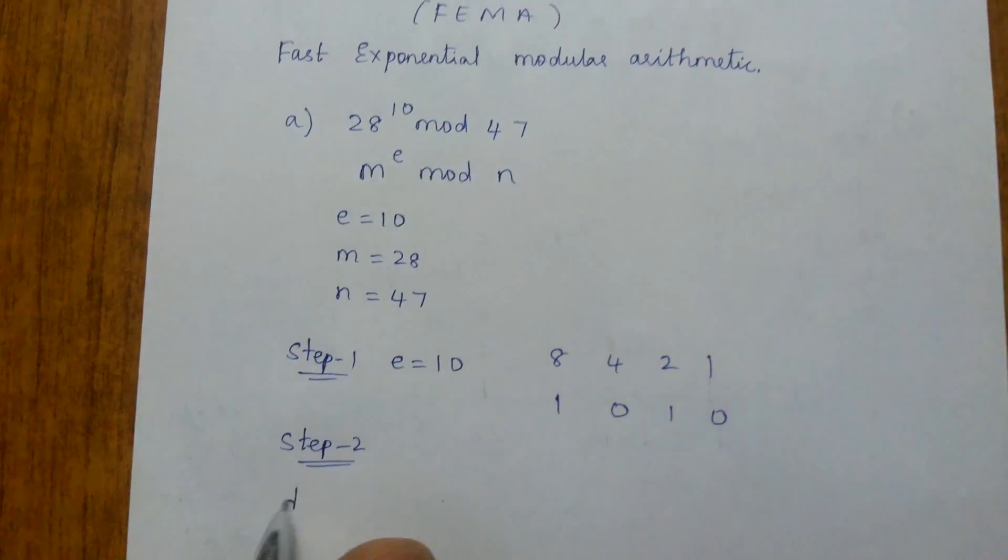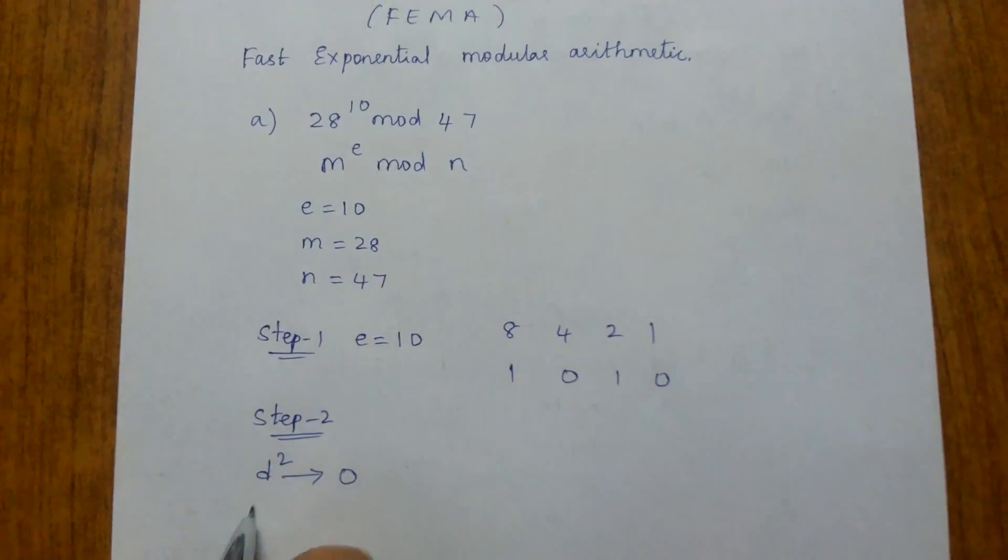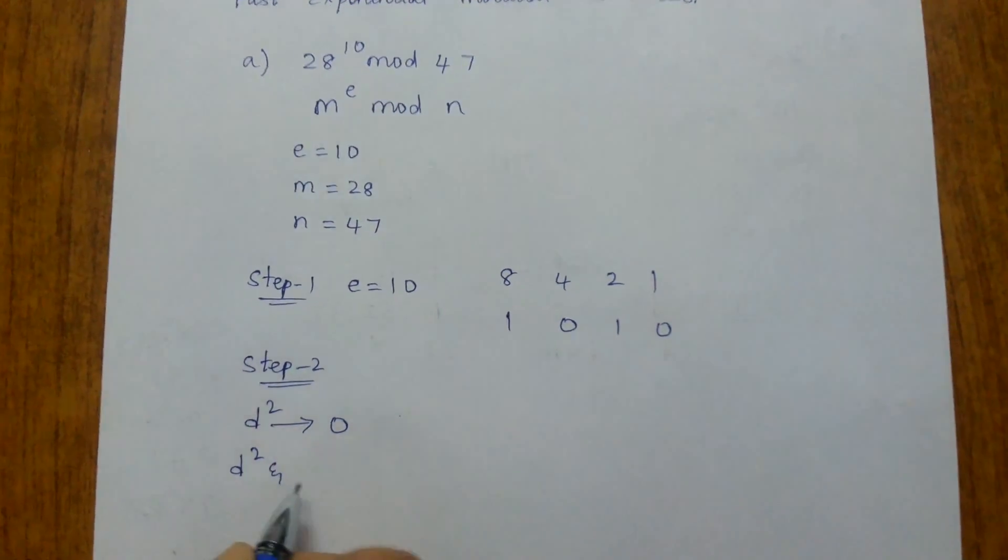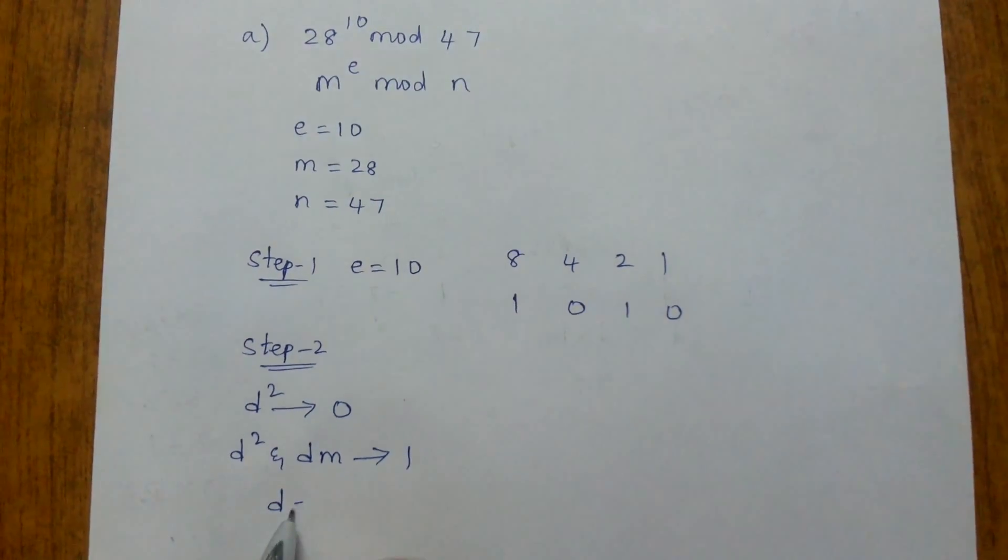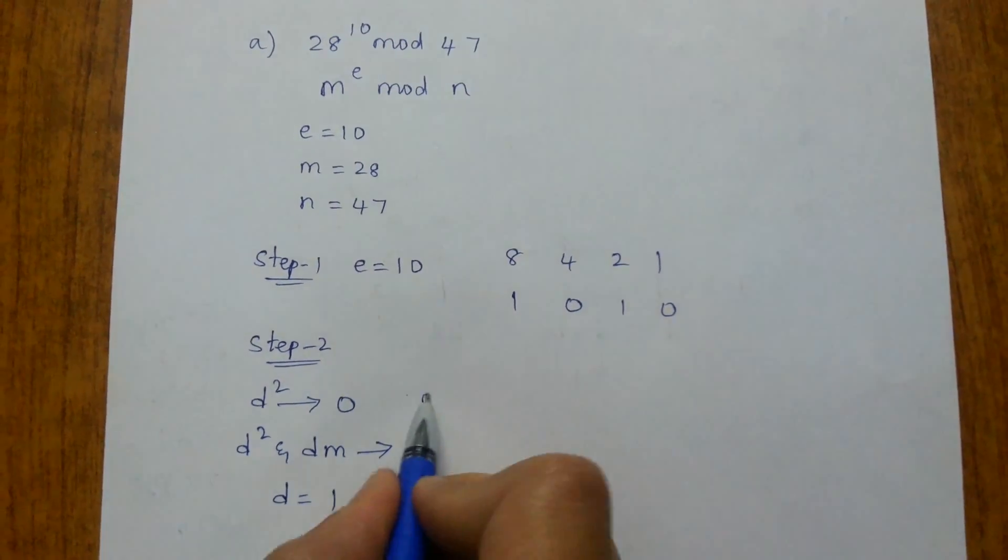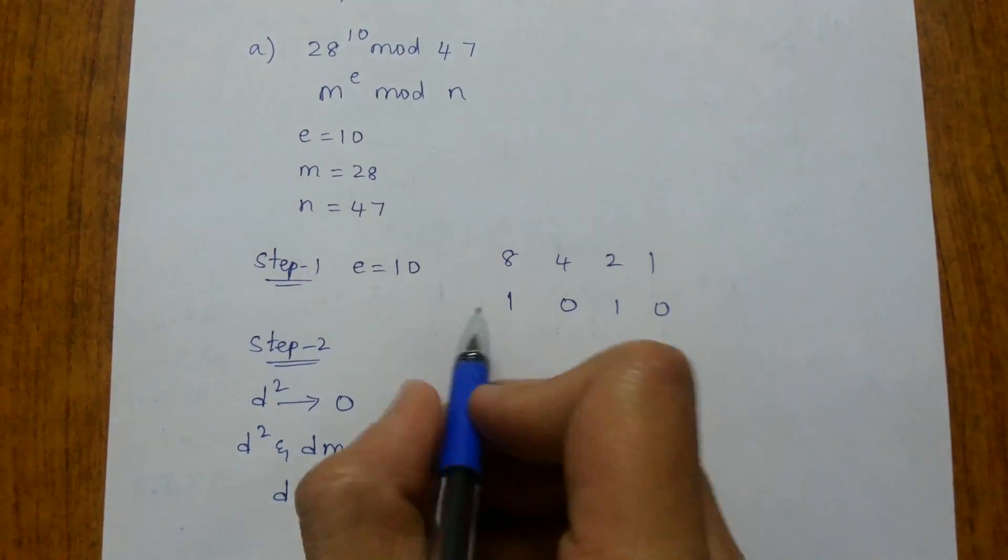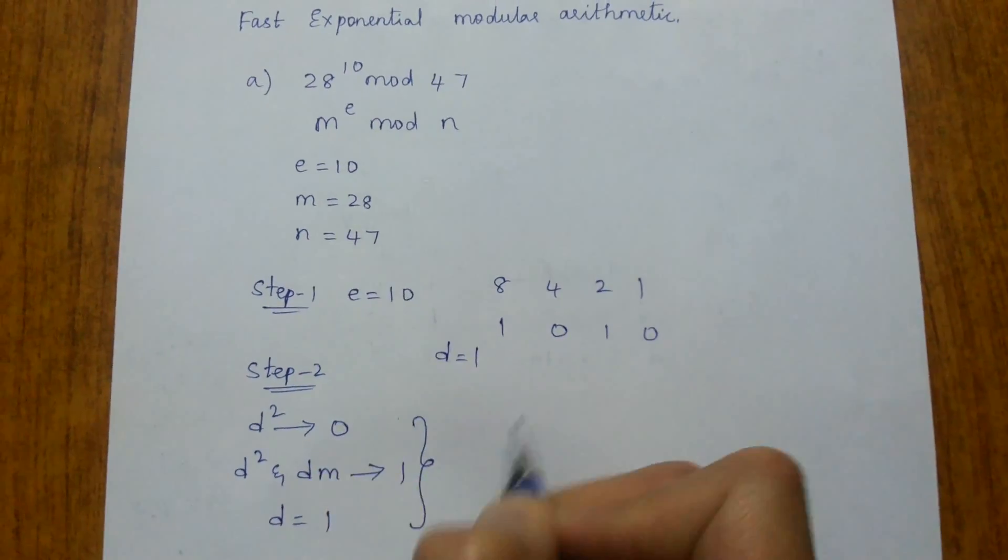Step 2, you have to write d² wherever you see 0, and write d² and dm wherever you see 1. Initially the value of d is taken as 1. These are by default, so we are taking the value of d as 1.